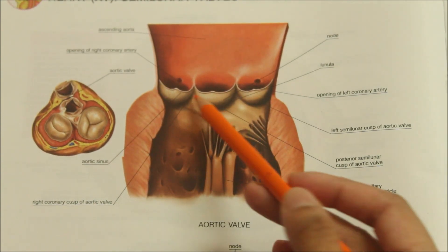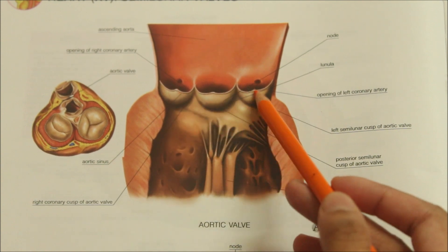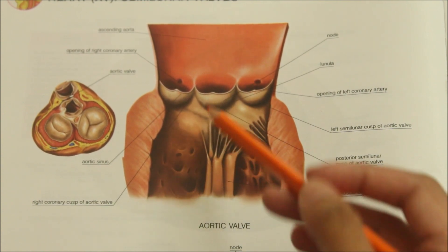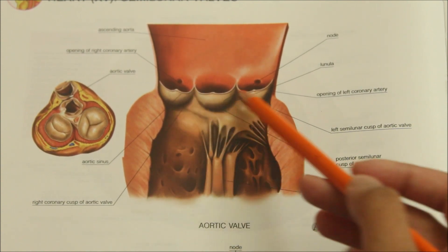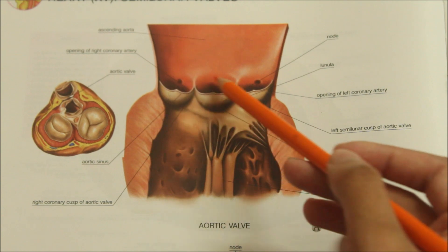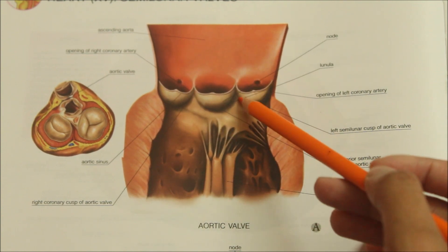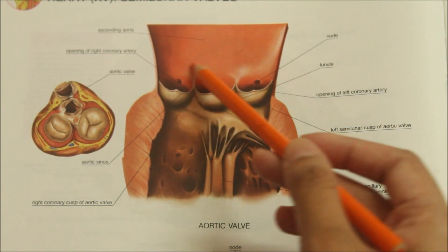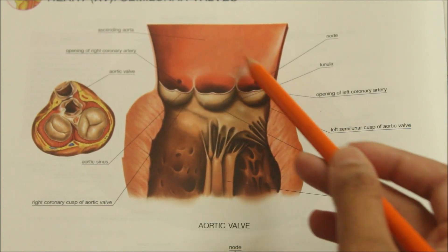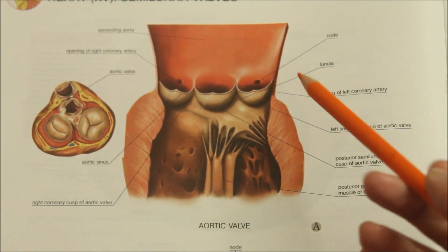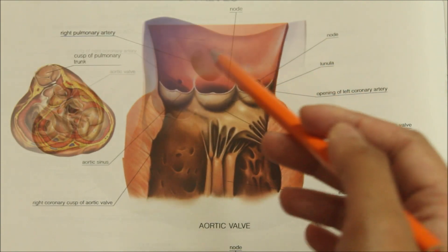Each semilunar valve has three cusps. For the aortic valve, the three cusps are attached directly to the vessel wall. Opposite the cusps, the vessels are slightly dilated to form the aortic and pulmonary sinuses.